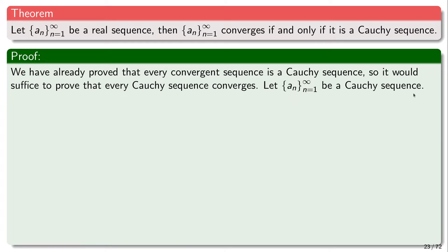Suppose that we have a Cauchy sequence of real numbers. We want to show that the sequence converges, so we'll need to show that there is some limit to which it converges. But we have no idea what this limit is. Finding this candidate for the limit is going to be a key step — we'll have to figure out how to find this limit. We'll do this in steps. In the first step, we'll show that the sequence a_n is actually bounded.